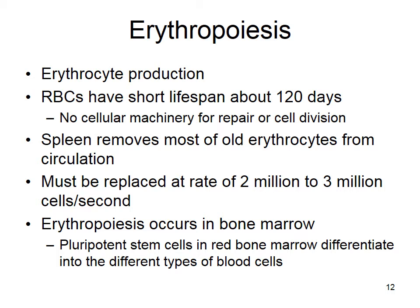Red blood cells have a short lifespan because they can't make proteins or regenerate their membranes — they last about 120 days, so you have to constantly replace them. Your spleen removes most of your old erythrocytes from circulation; if your spleen is removed, the liver takes over. You replace your erythrocytes at 2 to 3 million cells per second. The process of making new erythrocytes is called erythropoiesis and it occurs in your bone marrow.